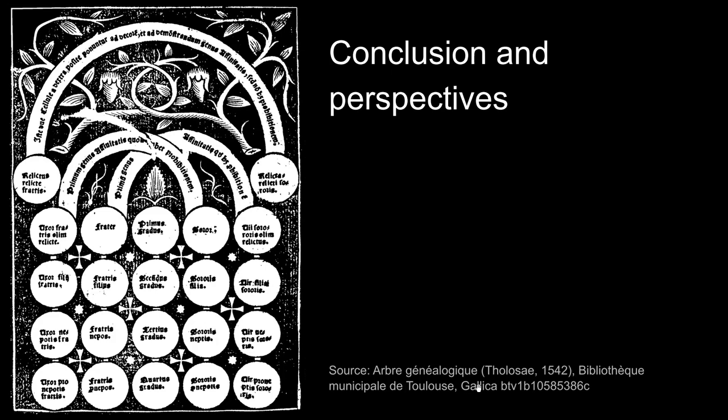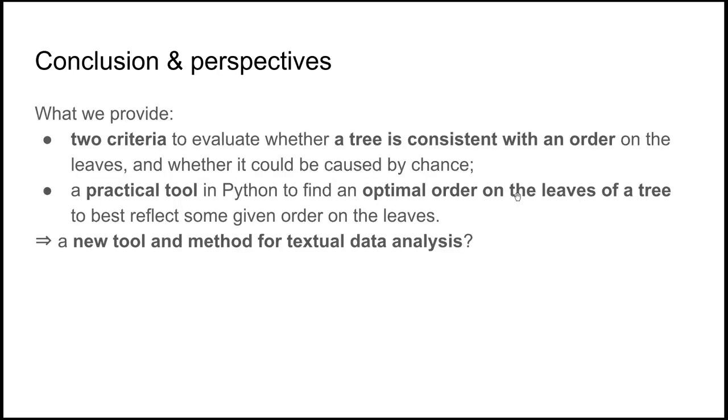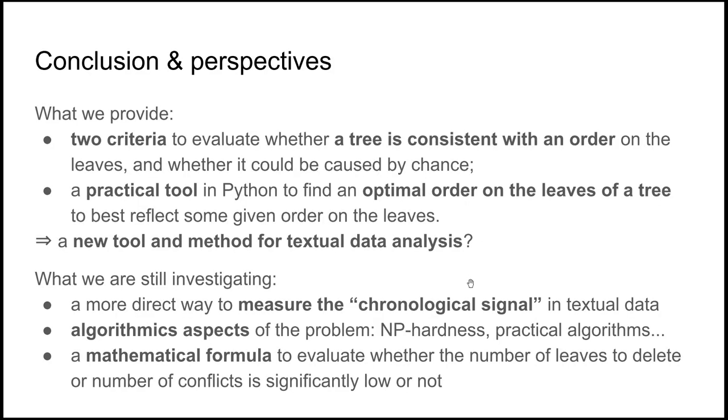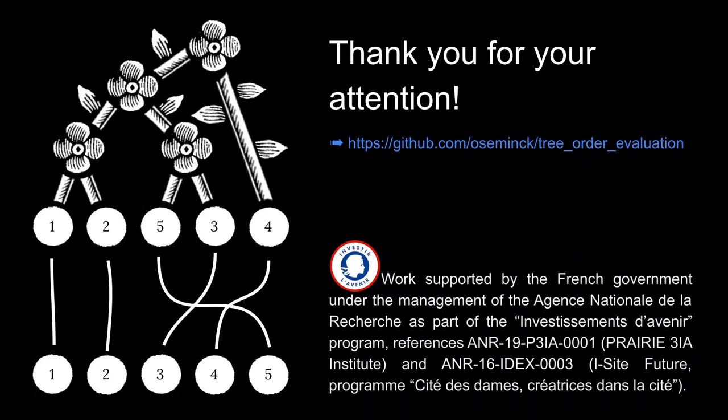So I conclude to summarize that we introduced two criteria to evaluate whether a tree is consistent with an order of the leaves or whether it could be caused by chance. Also to evaluate that, we have a practical tool in Python to find an optimal order on the leaves and to best reflect the order which is given as input. So maybe this will provide you a new tool or method for textual data analysis when you have a chronological signal in your data. And there are still practical and theoretical things to investigate. For example, a more direct way to measure the chronological signal in textual data. Some algorithmic aspects, especially with some colleagues of my lab, the NP hardness of some problems when the number of children is not limited and a mathematical formula to avoid doing simulations and instead to be able to directly evaluate the probability to obtain it by chance, those two criteria. So thanks for your attention and don't hesitate if you have some questions.